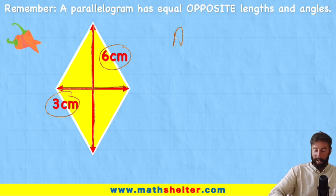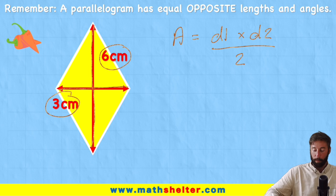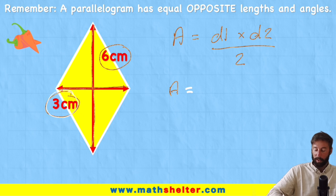So in this case, the area actually equals diagonal 1 times diagonal 2 divided by 2. And we're going to understand why in a moment. But let's just plug these numbers in for now. So therefore, area equals diameter 1. Let's say they're 3 centimetres. So 3 times diameter 2, which is 6 centimetres, divided by 2.